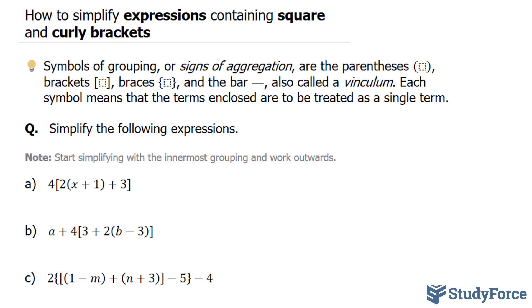In this lesson, I'll show you how to simplify expressions containing square and curly brackets. Symbols of grouping, or signs of aggregation, are the parentheses, the brackets (the square ones), braces or curly brackets, and the bar, which looks like this,